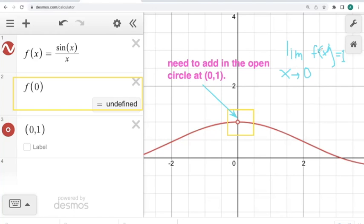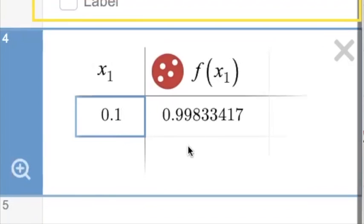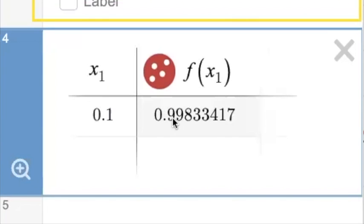What we can do is investigate this numerically now by making a table of values. So I insert a table here, and I'm going to make this be f of x sub one. What's a number that I could plug in that's close to x equals zero? When x is equal to 0.1, the output here is 0.99833417.